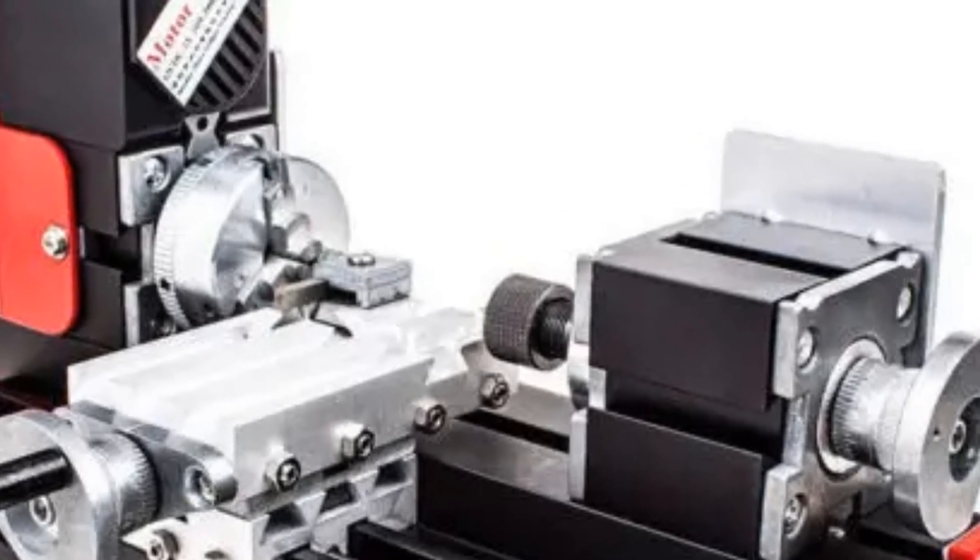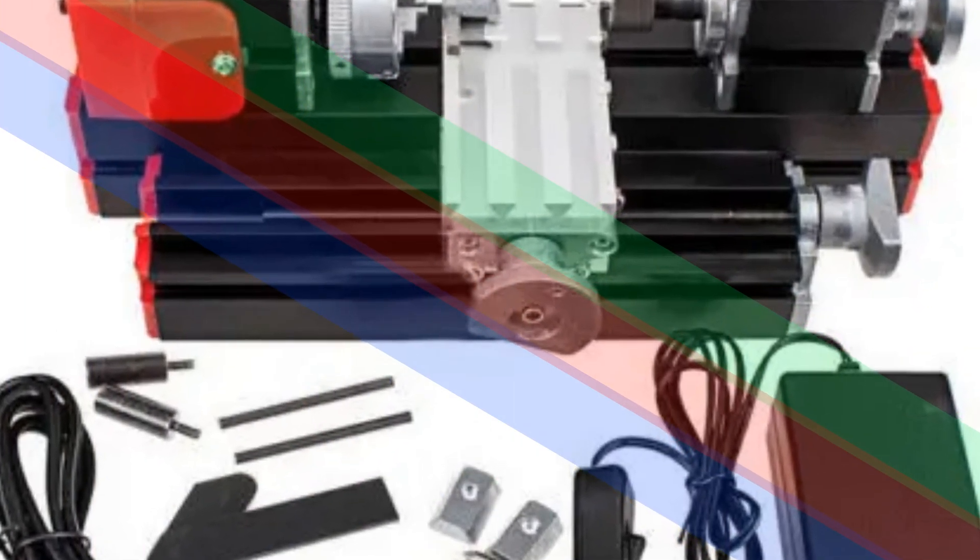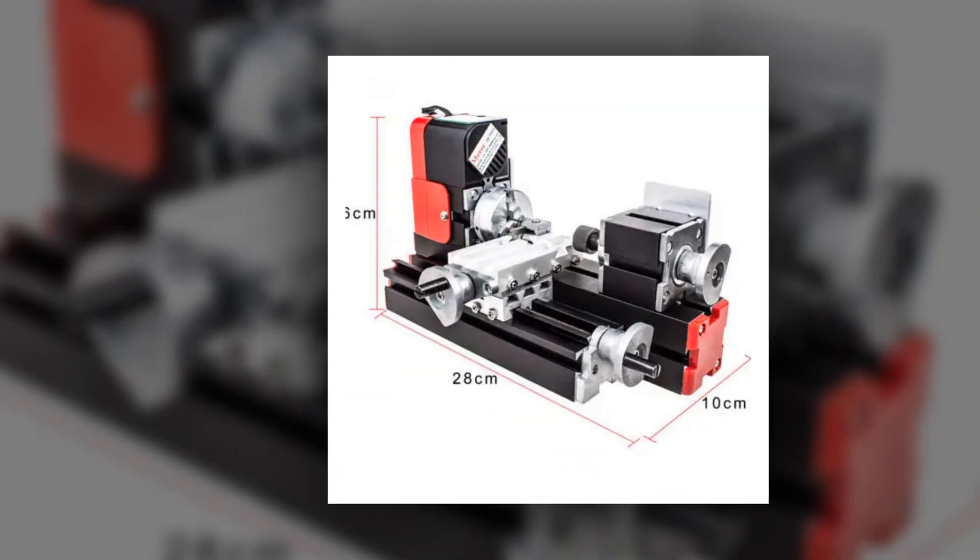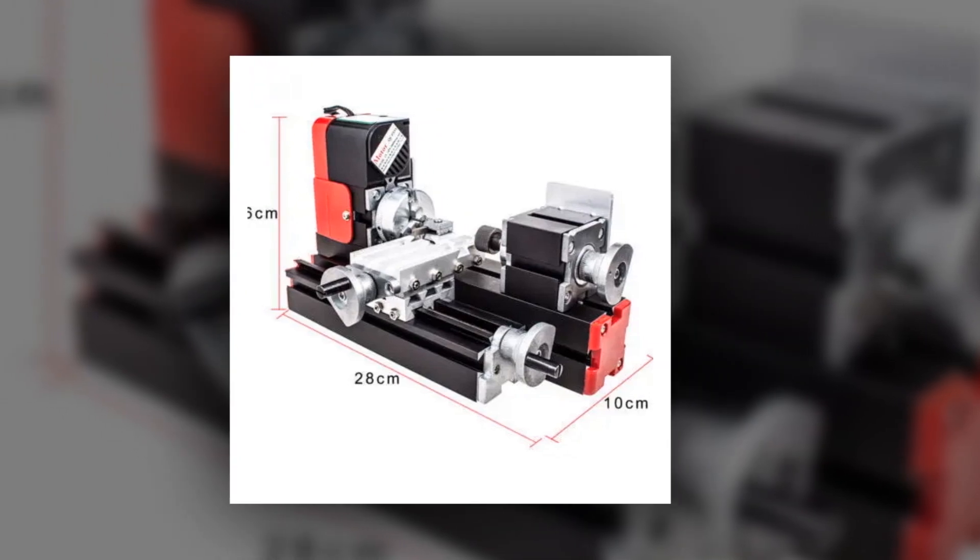With a 20W motor capable of reaching speeds of up to 20,000 revolutions per minute, this mini lathe provides ample power for precision work. It comes as a complete set, offering a miniature metal multifunction machine that's versatile and easy to use.